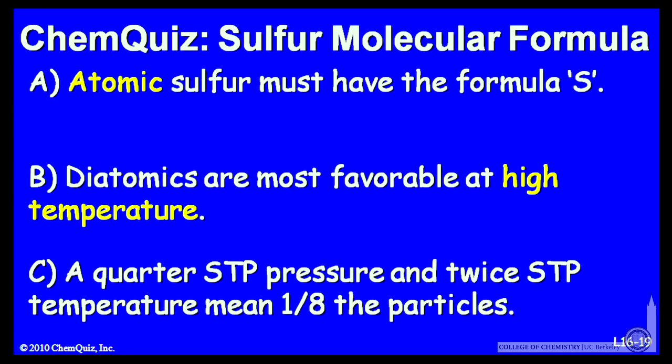Let's look at a possible explanation for each answer. A: it's atomic sulfur, so we must have the formula S. B: diatomics are more favorable at high temperatures, so we should have S2. Or C: there's one quarter of the STP pressure and twice the STP temperature, so one eighth of the particles must be in the sample. Think about those three and make another selection.